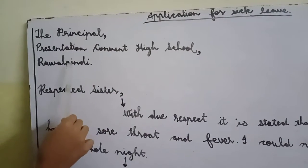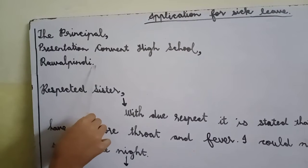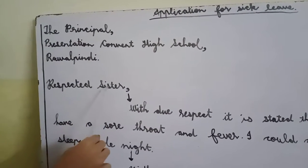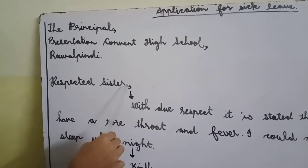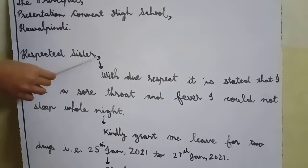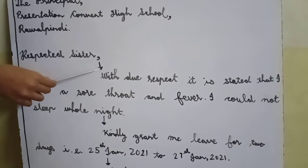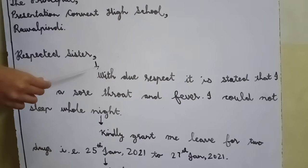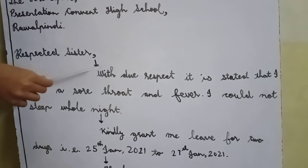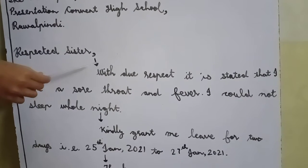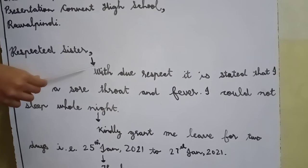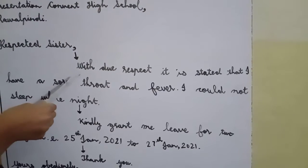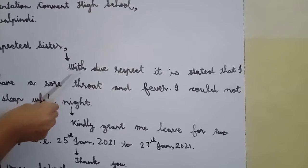In the next line, we will write Rawalpindi full stop. Leave one line. Respected sister comma. Under the comma, we will mark an arrow. This arrow will help us to write the application in a sequence. We will start writing an application.